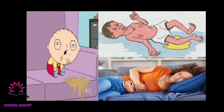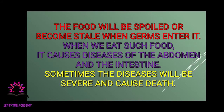If we eat contaminated food, we get stomach pain, loose motion or diarrhea, and vomiting. Food becomes spoiled or stale when germs enter it. Eating such food causes diseases of the abdomen and intestine, and sometimes the diseases can be severe and cause death. So we should wash vegetables and raw fruits before eating them. Fruits should be cut into pieces just before eating.